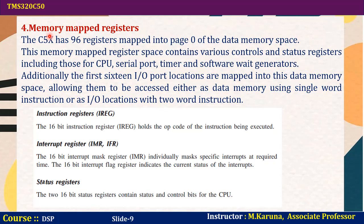The C5x processor has 96 registers mapped into page 0 of the data memory space. The memory is divided into pages: page 0, page 1, page 2, etc. This memory mapped register space contains various control and status registers including those for CPU, serial port, timer, and software wait state generators. Additionally, the first 16 I/O port locations are mapped into this data memory space, allowing them to be accessed either as data memory using single-word instructions or as I/O locations with two-word instructions.